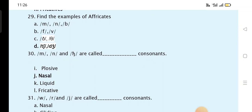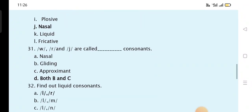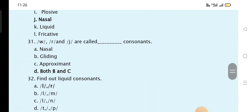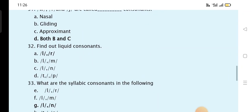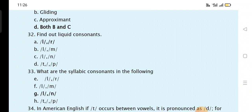M, N, NG are called blank consonants: nasal consonants. W, R and Y are called blank consonants: gliding and approximant. Find out liquid consonants: L and R.